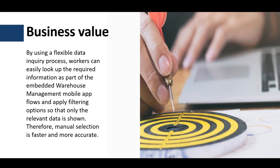This feature increases the usability of the Warehouse Management Mobile application by introducing a new menu item for the data inquiry. The new menu item is generic and flexible enough to help warehouse workers look up the required information and select the related records from a list rather than entering the data manually, which will speed up the process, increase the data accuracy, and reduce the data entry issues.